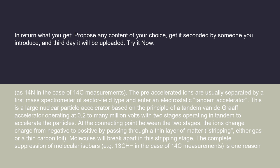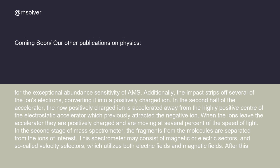Molecules will break apart in this stripping stage. The complete suppression of molecular isobars — e.g. 13CH⁻ in the case of 14C measurements — is one reason for the exceptional abundance sensitivity of AMS. Additionally, the impact strips off several of the ions' electrons, converting it into a positively charged ion.